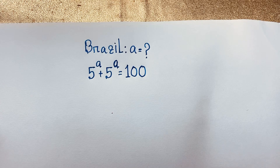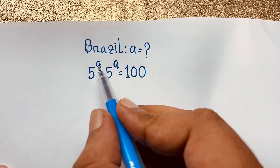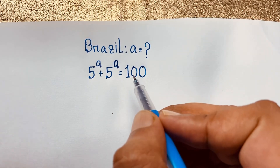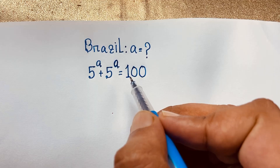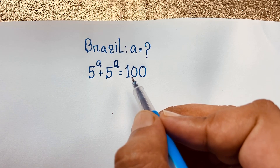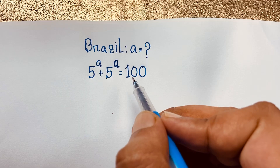Hello everyone, welcome to Rasha's classroom. Today we are solving an interesting exponential math problem which is 5 to the power a plus 5 to the power a is equal to 100. A is equal to what? How to solve this interesting math question?